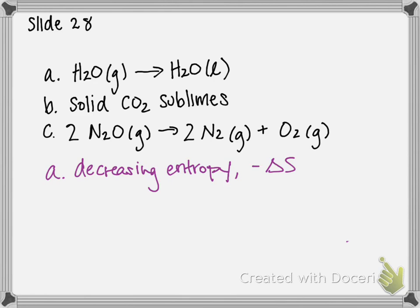For B, solid CO2 sublimes. Sublimation is when our phase is changing from a solid to a gas. According to the instances we just learned about, a phase change from solid to gas would lead to an increase in disorder. Therefore, the sign of our delta S would be positive. So in this case, we have an increasing entropy and our delta S would be positive.